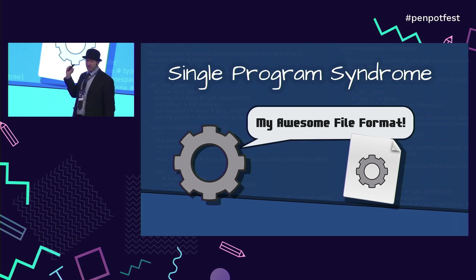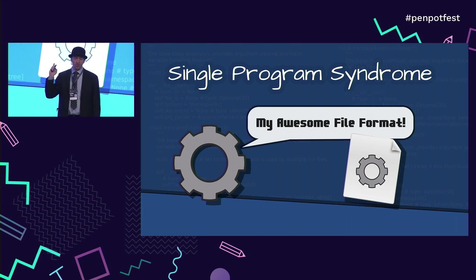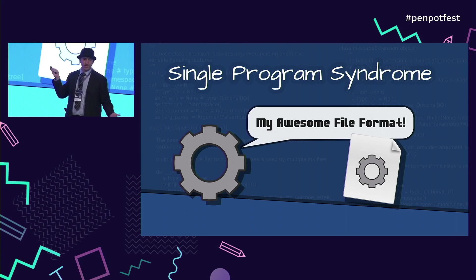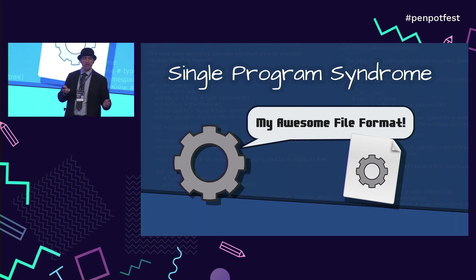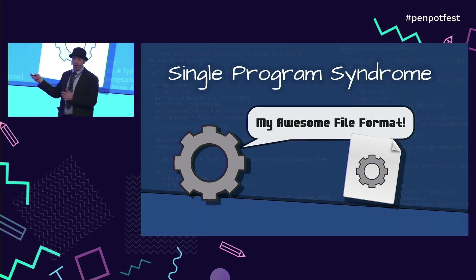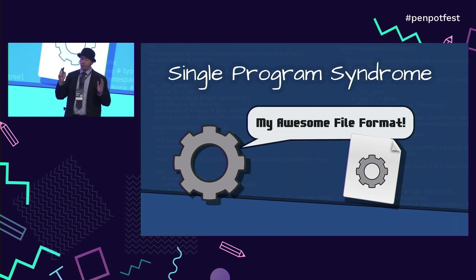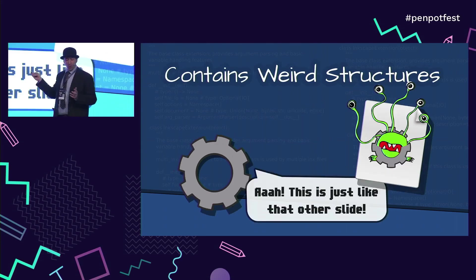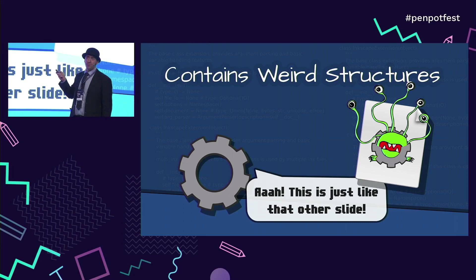We also have 'single program syndrome.' This happens when you have a single program that uses its own file format. With Adobe Illustrator, you have a massive corporation with lots of individuals, but at the end of the day only one program is opening and saving AI files. That file format is going to contain some very weird things, and we know this because reverse engineering AI files reveals some crazy stuff. What we want is files that are used by multiple programs.